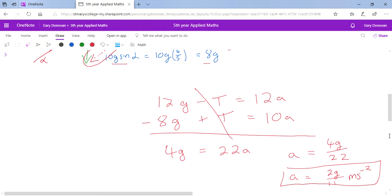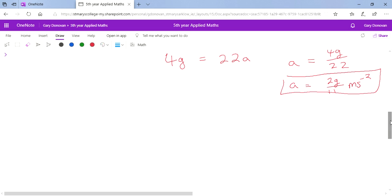Then what you do is you sub in these values into one of your equations to figure out what t is. So t is 10a plus 8g. That's going to be 10 times 2g over 11 plus 8g. I'd like you to figure that out now, but you should get an answer of 108g over 11. Newtons is the unit for force.